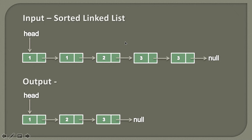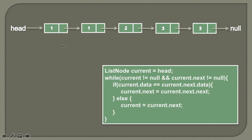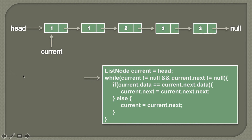Let's move ahead and see the demo of the algorithm. We are given the linked list which is sorted and has nodes 1, 1, 2, 3, 3. The basic idea is we will traverse the linked list using a current pointer and check whether the data of the current node is equal to the data of its next node. If they are equal, it means we have encountered a duplicate and we'll write the logic to remove that duplicate node.